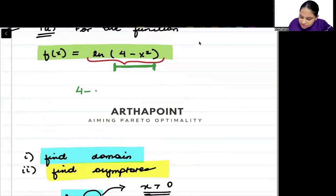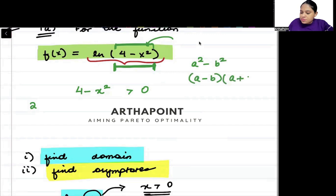Whatever comes inside this log, whatever thing we are taking the log of, that thing needs to be positive. That thing needs to be greater than 0. So 4 minus x square can be written using the formula a square minus b square. It can be written as (a minus b) times (a plus b). So I can write this as (2 minus x) times (2 plus x) greater than 0.